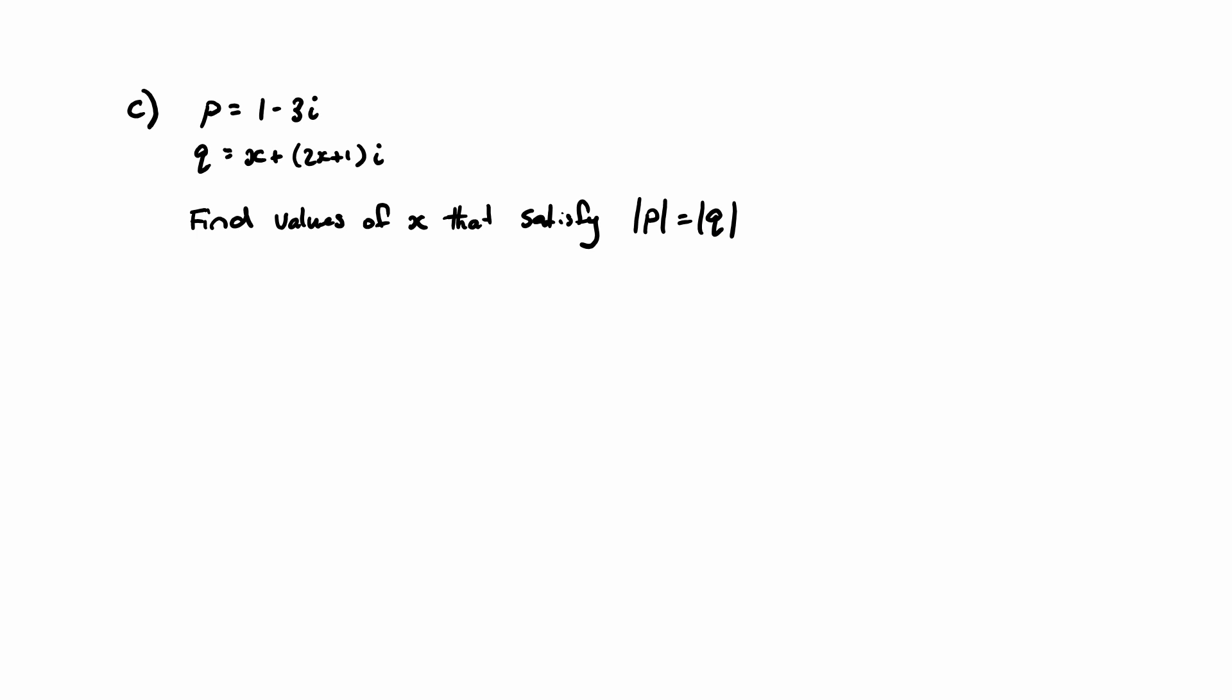We can essentially just find the magnitude of P. So the magnitude of P equals the square root of each of the terms squared, so 1 squared plus negative 3 squared, and this will just be 1 and 9, which is root 10.